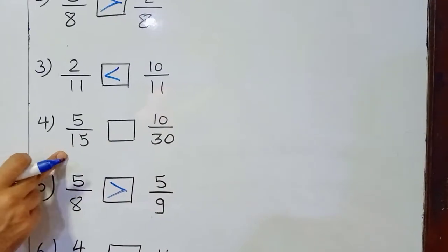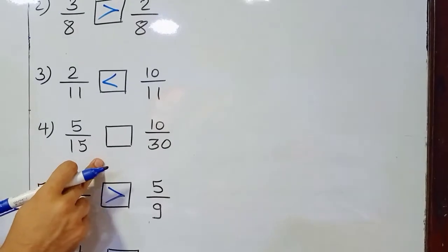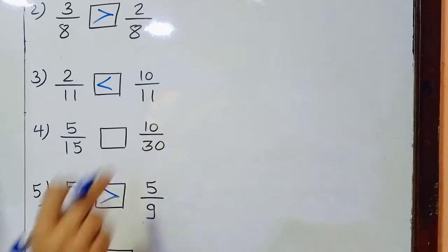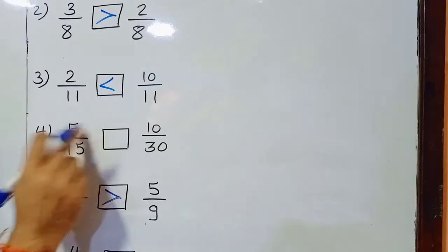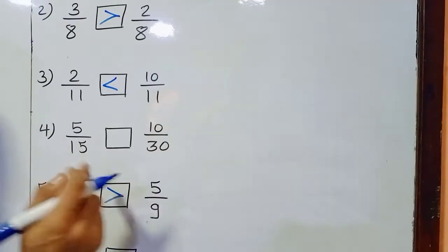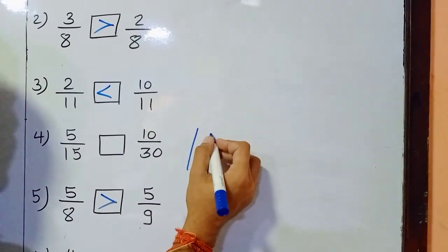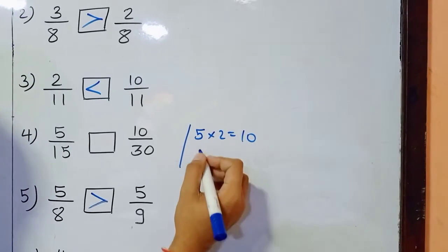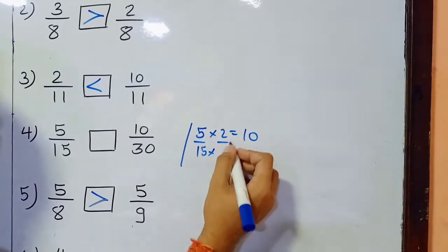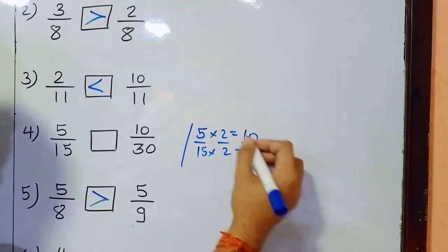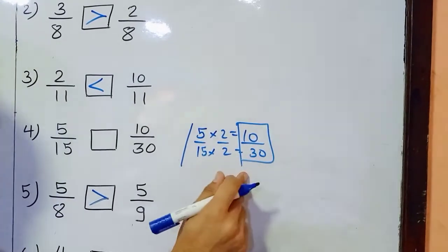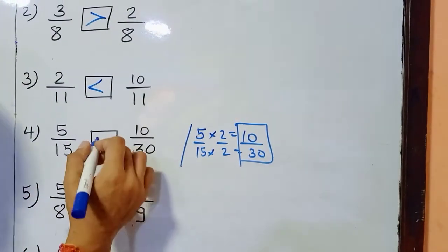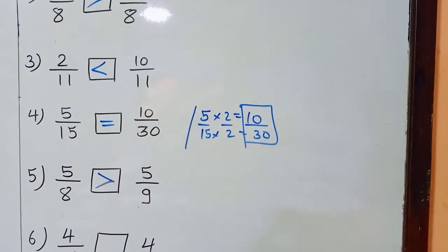Now for problem number 4 — if you are able to see 5 upon 15 and 10 upon 30. Is 10 a multiple of 5? Yes, 5 times 2 is 10. So if we convert 5 into 10 by multiplying by 2, we also multiply 15 by 2 to get 30. That gives us 10 upon 30, and the second fraction is already 10 upon 30 — so both have equal value.